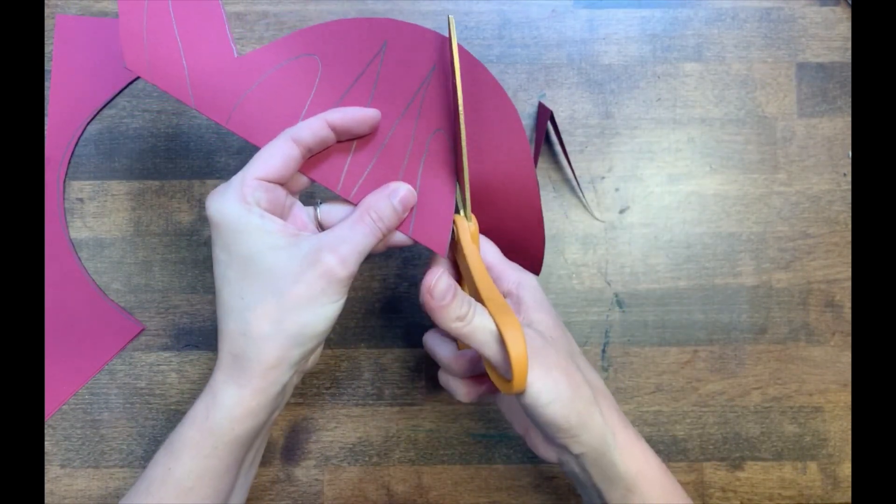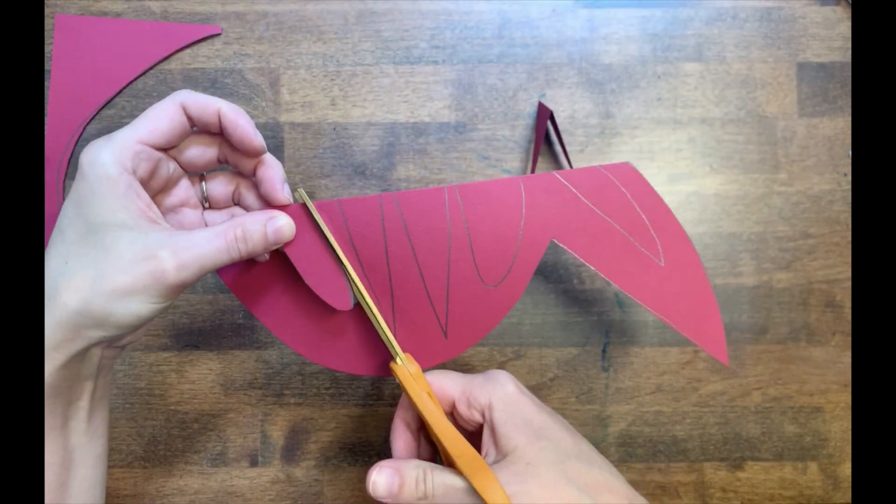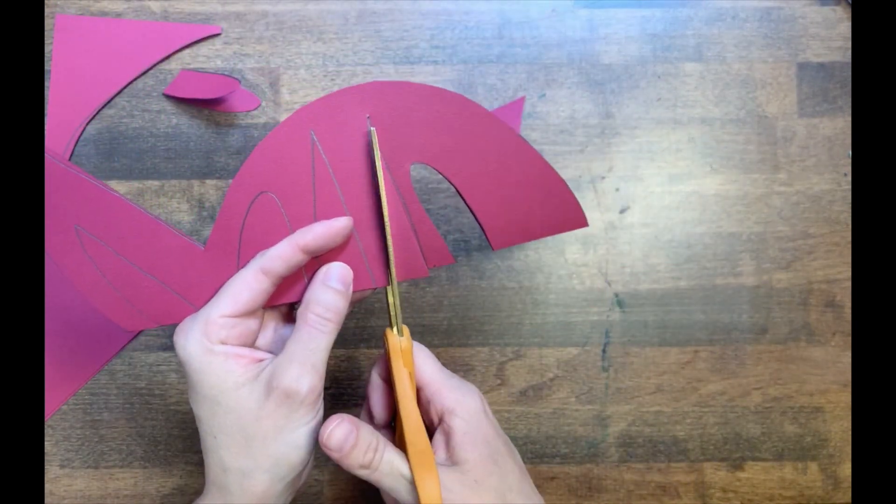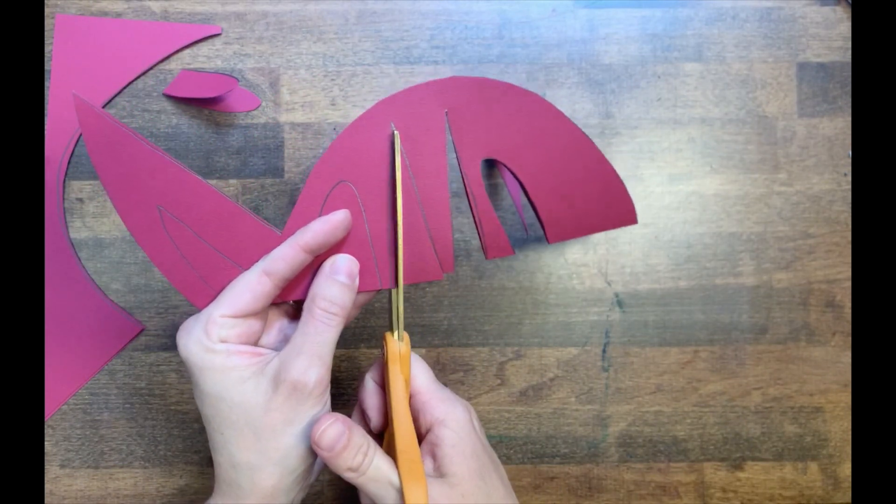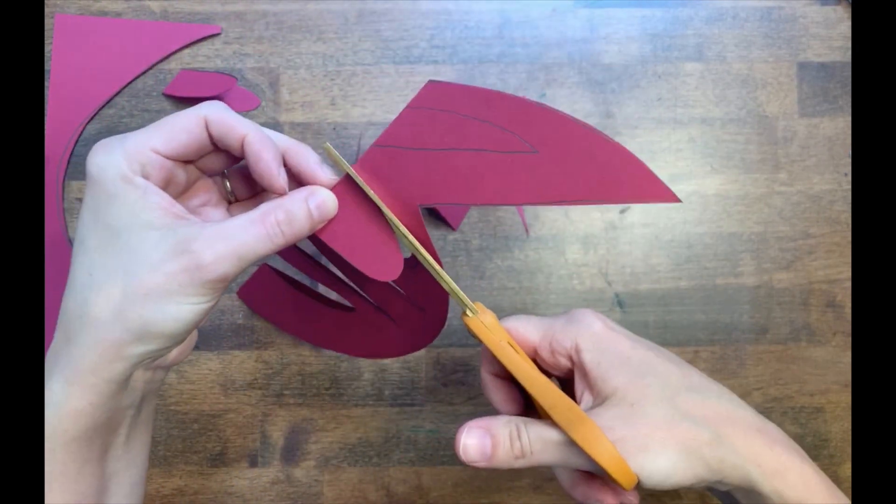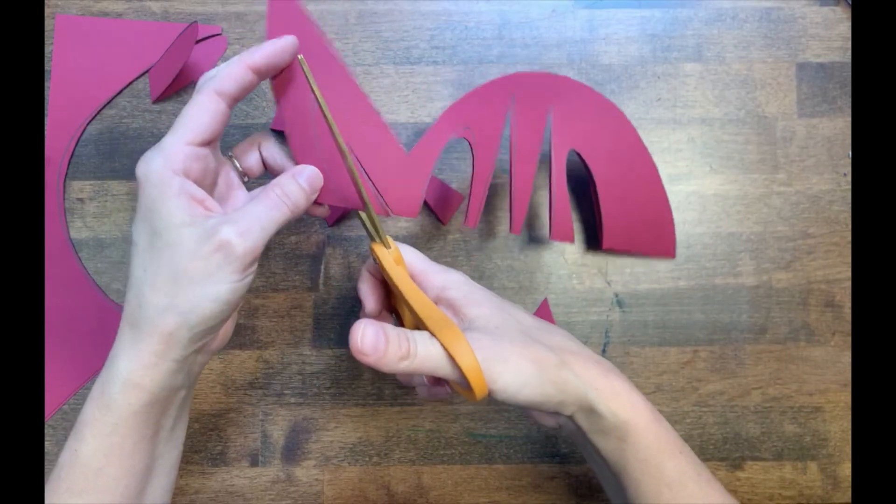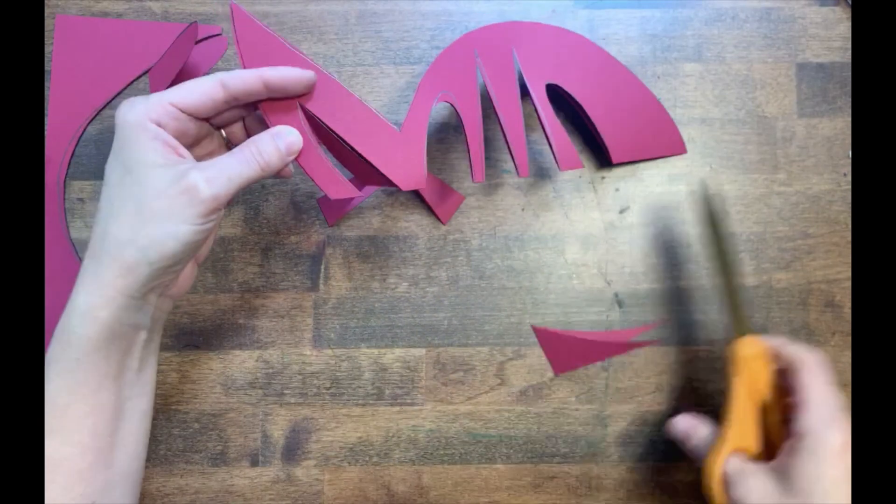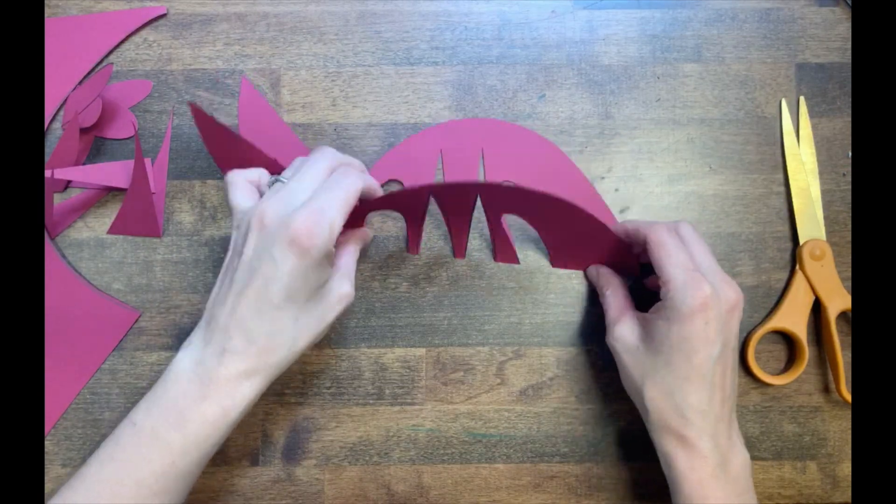Now we can move on to cutting out the shapes in the inside of your fish's body. Cut one shape at a time. It's okay if you don't stay exactly on the lines. Be careful that you don't cut all the way through to the edge of your fish. If you do, your fish will fall apart into pieces and you want it to be one single piece. Done cutting? Unfold your fish and admire the view.